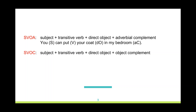We have one more basic structure, which could have a subject, a transitive verb, a direct object, and an object complement. Look at the example: 'you' — this is the subject — 'have made' — the verb phrase — 'me' — direct object — 'very happy' — object complement.